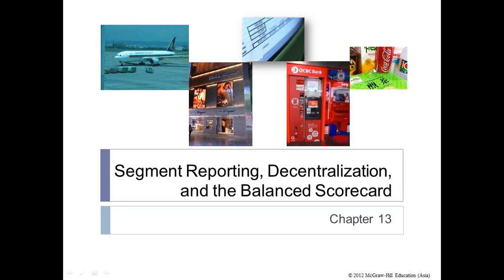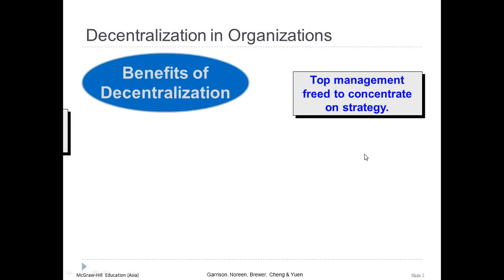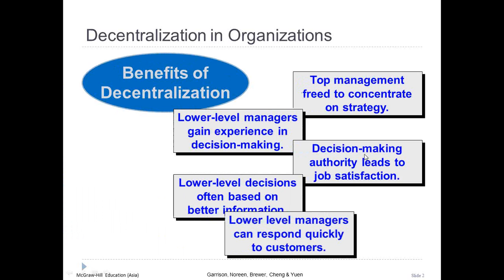Chapter 13: Segment Reporting, Decentralization, and the Balance Scorecard. Managers in large organizations have to delegate some decisions to those who are at lower levels in the organization. We're going to explain how responsibility accounting systems, segmented income statements, return on investment (ROI), residual income, and the Balance Scorecard measures are used to help control decentralized organizations.